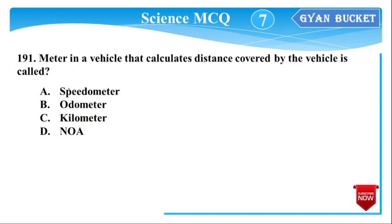Next question: The meter in a vehicle that calculates the distance covered by the vehicle is called an odometer. The speedometer, on the other hand, measures speed.